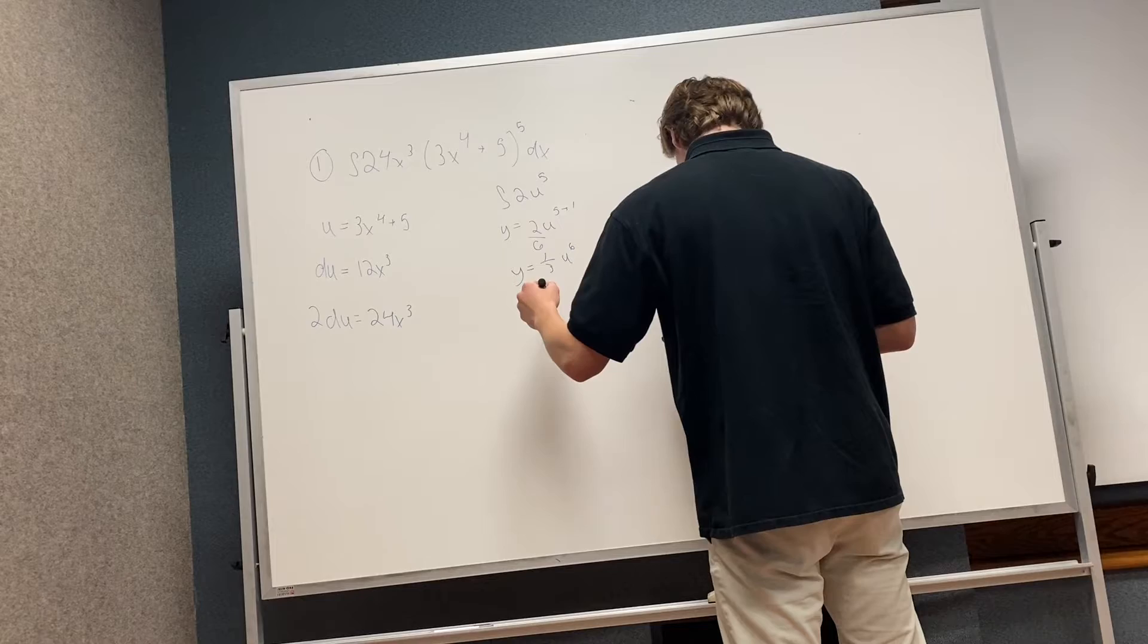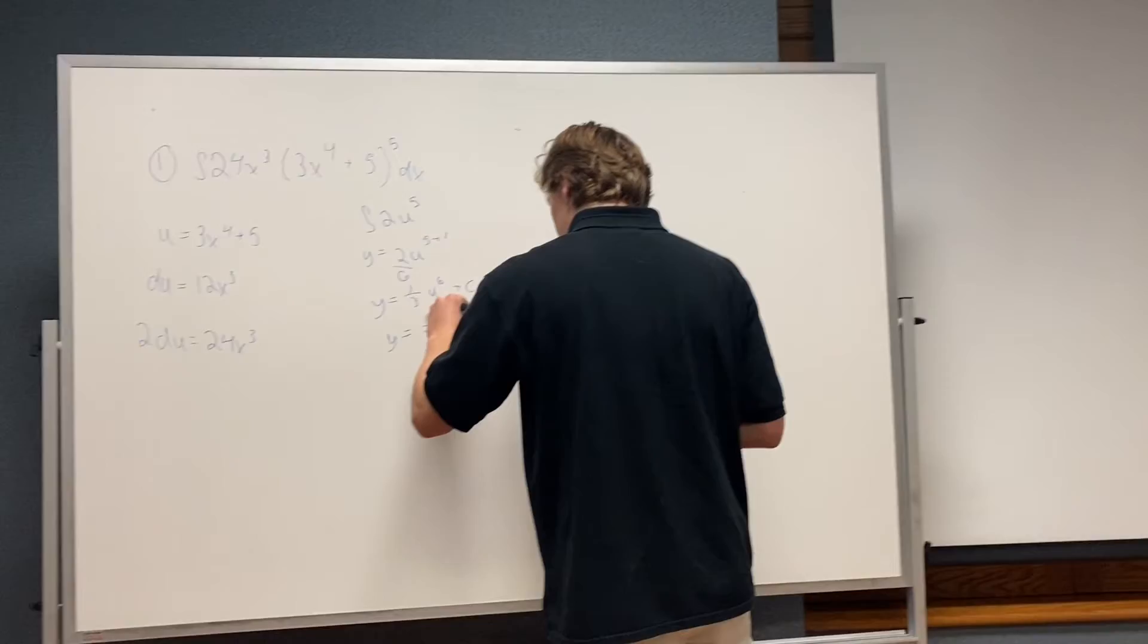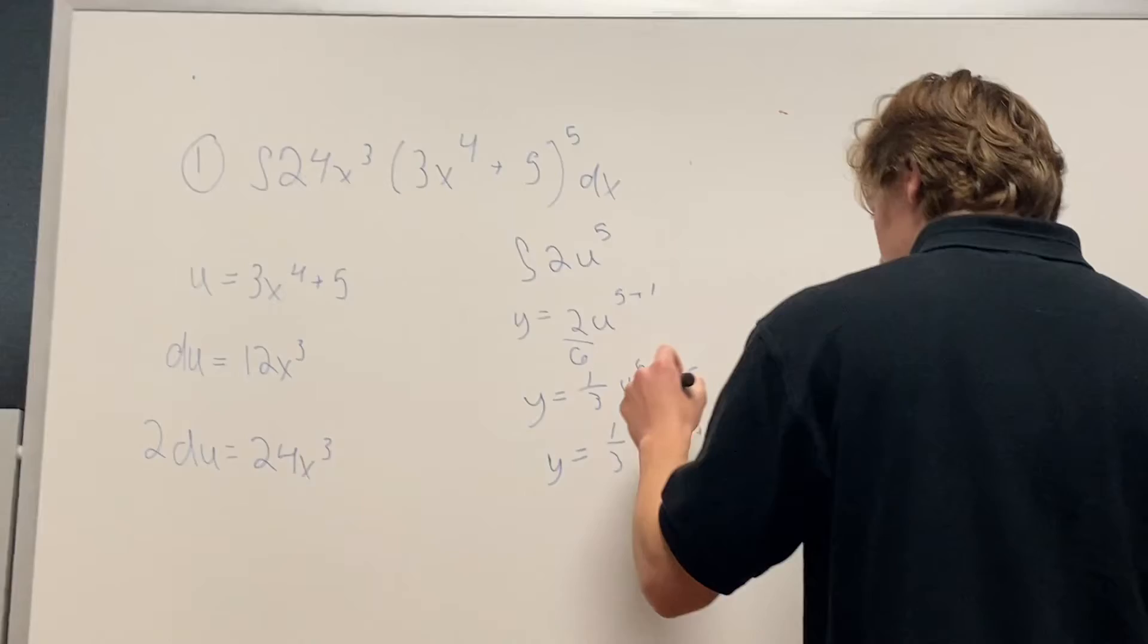Then you plug in the u, 3x to the 4th plus 5, you can look back there for the u, all to the 6th, which you have here, plus c.